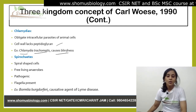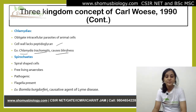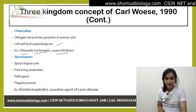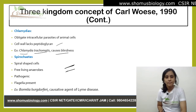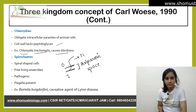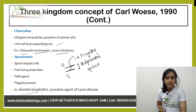Spirochetes. Most members of this group contain spiral-shaped cells. They are free-living anaerobes, though some are pathogenic. Flagella arise from the periplasmic space between the inner and outer membrane of the cell wall. An example of Spirochetes is Borrelia burgdorferi, which is the causative agent of Lyme disease.